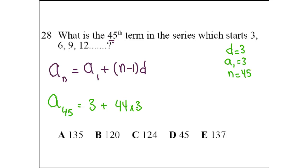times d, the difference, 3. Now 44 times 3, 40 times 3 is 120, 4 times 3 is 12, so that's 132. So 132 plus 3 will give you 135. Answer is A.